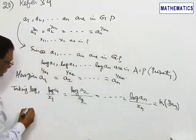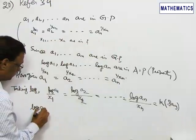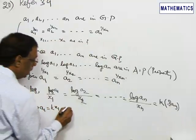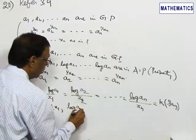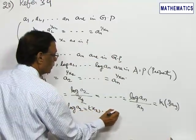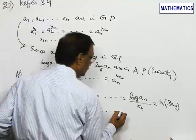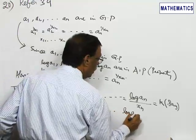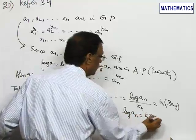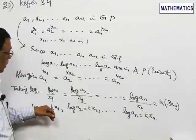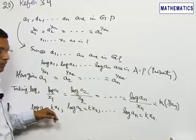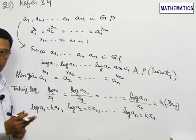Cross multiplying: log a₁ = K·x₁, log a₂ = K·x₂, and so on, and the last term log aₙ = K·xₙ.